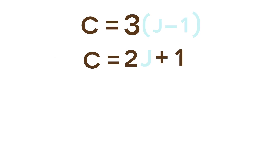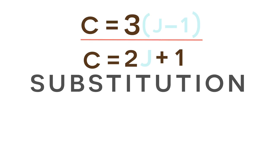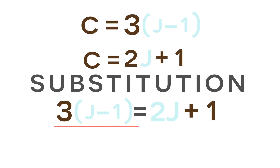The easiest way to solve this system of equations, in my opinion, is by substitution, because both equations are written in terms of C. In our first equation, C is equal to three multiplied by J minus one. So we can substitute three times J minus one in for C in our second equation. After substitution, we have a new equation in terms of J: three multiplied by J minus one equals two J plus one.